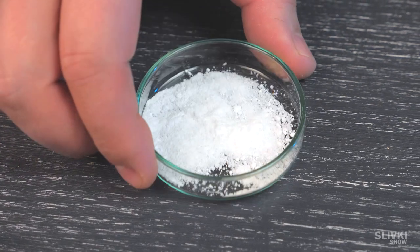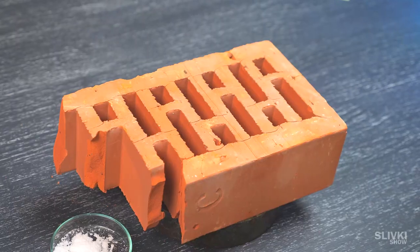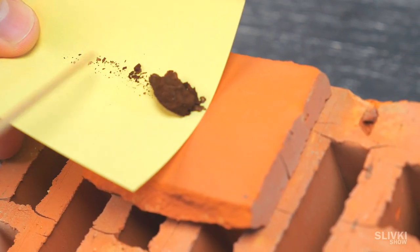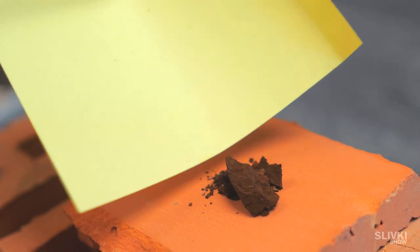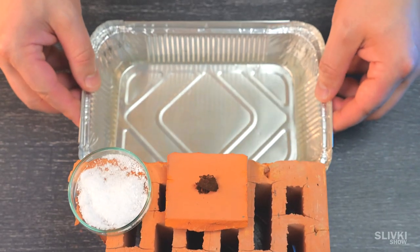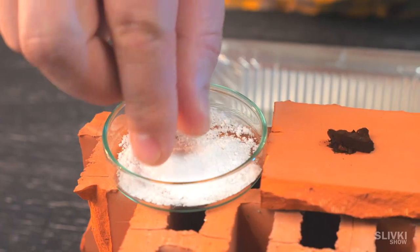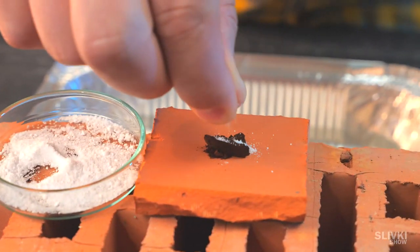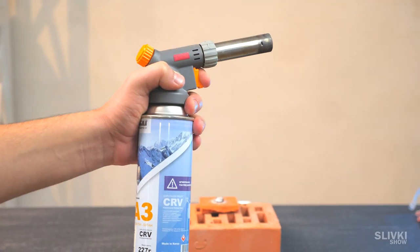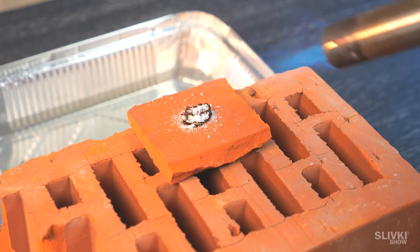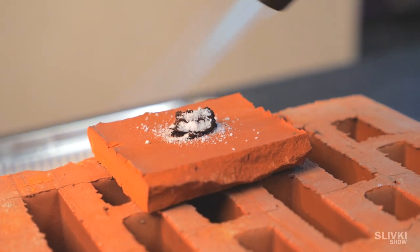Meanwhile, we prepared borax. We take a piece of brick and pour the dried powder with gold. Underneath, we set up a container with water. Now we sprinkle borax on the gold, take a gas torch, and start heating the brick and then the metal itself.